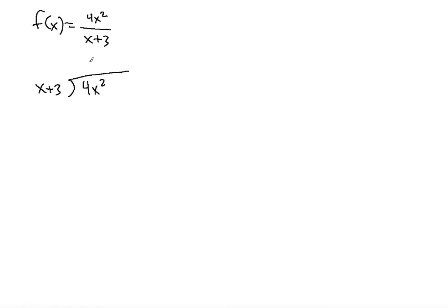So 4x squared divided by x gives you 4x, multiply it back, you get 4x squared, and then we can treat this as a zero after that, and then multiplying 3 by 4x gives us plus 12x. So you subtract these two guys and you will have zero and then minus 12x.